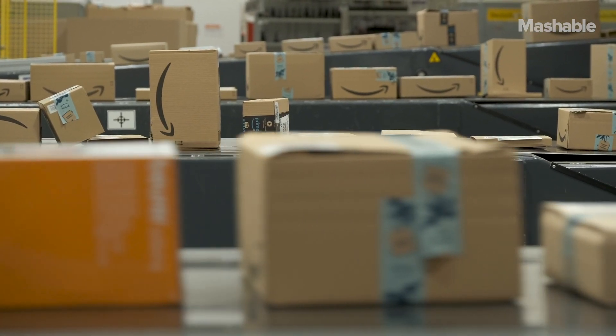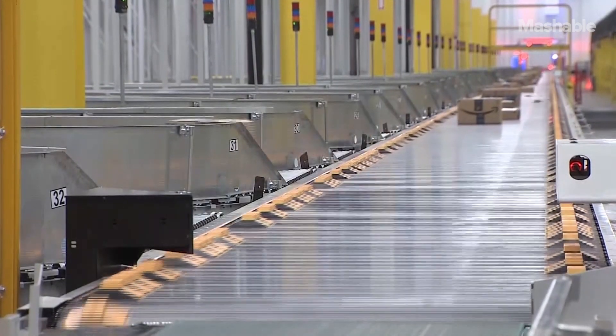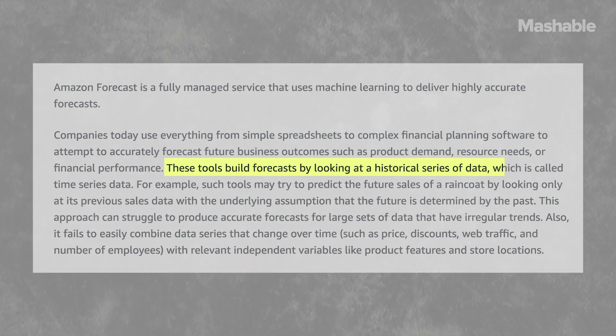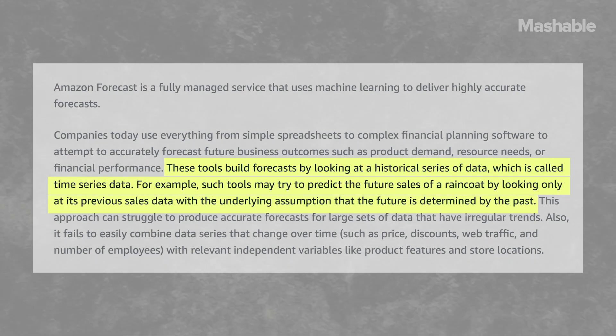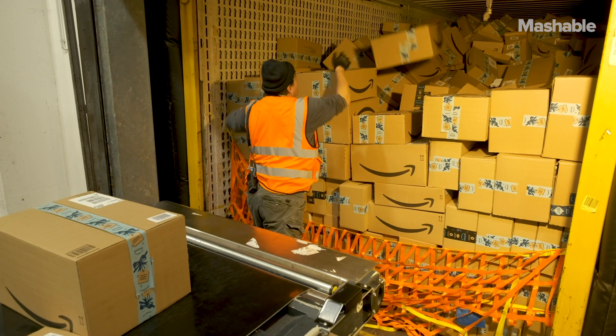Another example is Amazon. They have algorithms for predicting what you like. They also have algorithms for demand forecasting — how much of each item people are going to want to buy in the near future and where — so they can stock those things in the warehouses. These days they claim they can predict what you want so well that they will put it on a truck before you've even ordered it.